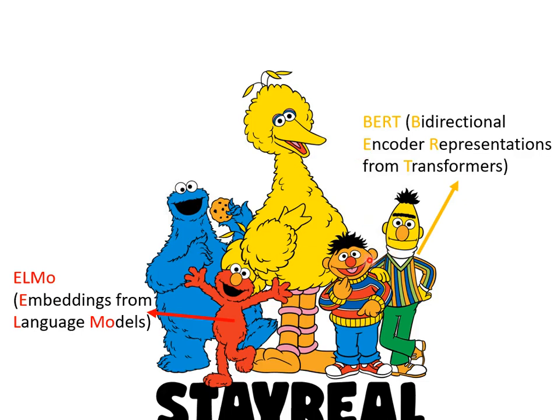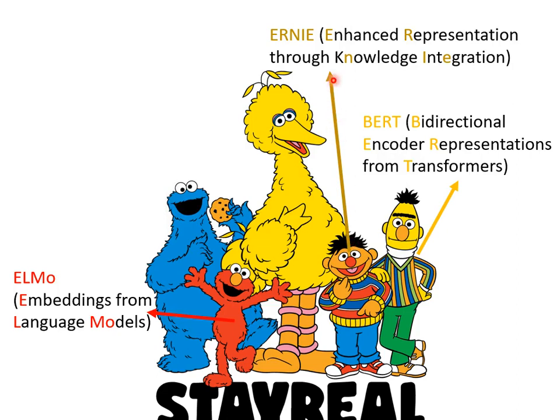BERT's best friend is Ernie. After BERT, two different models immediately appeared, and they are both called Ernie. The full model name of the first one is Enhanced Representation from Knowledge Integration, and its abbreviation is called Ernie. It's a little bit weird — they just named it after Ernie because they wanted to.